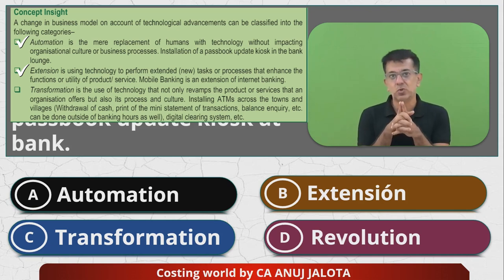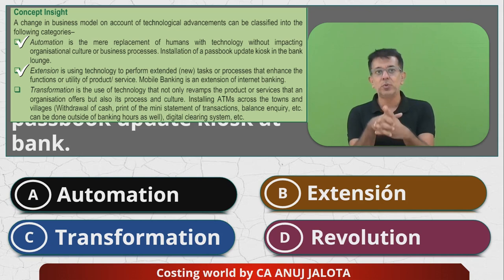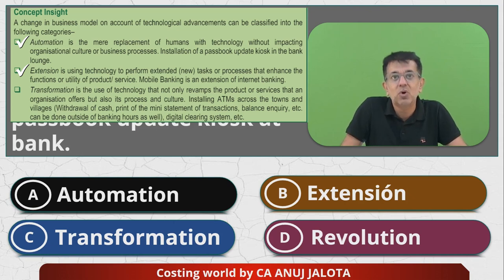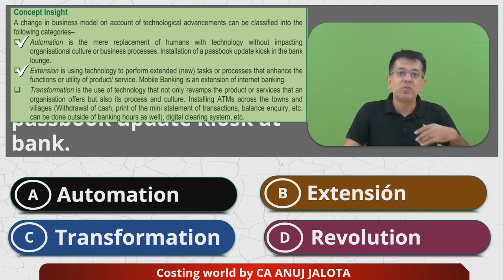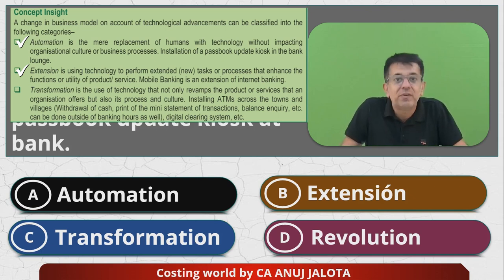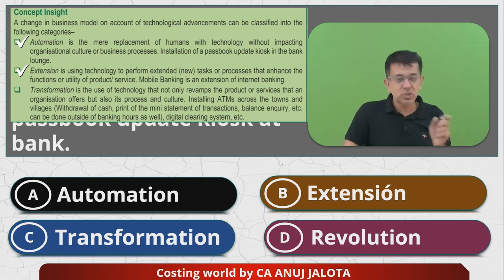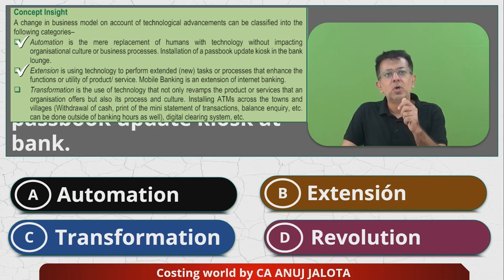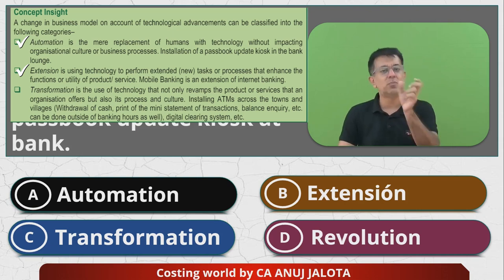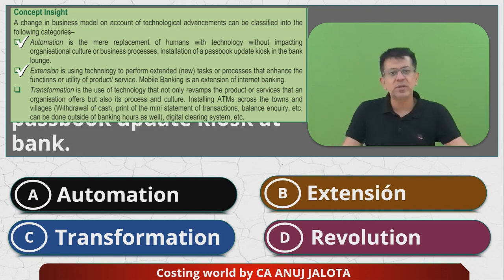Extension is using technology to perform new tasks or processes that enhance the functions or utility of a product or service. The best example is mobile banking — it is an extension of internet banking. Internet banking was almost revolutionary when it came, but mobile banking replaced it quite fast. These days mobiles have made our life very easy. Extension means using technology to perform new tasks — something like OTPs became possible and mobiles can even auto-read OTPs.